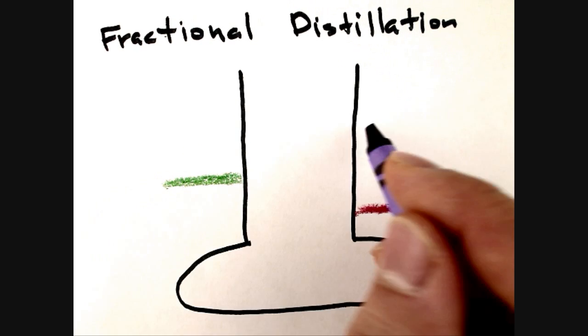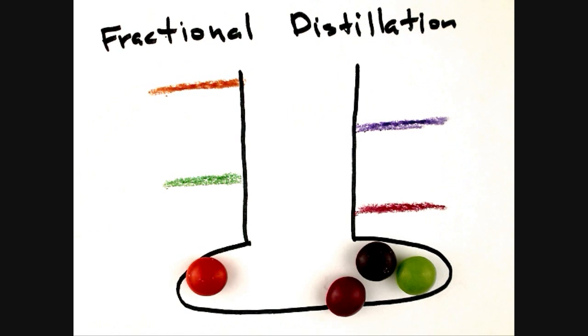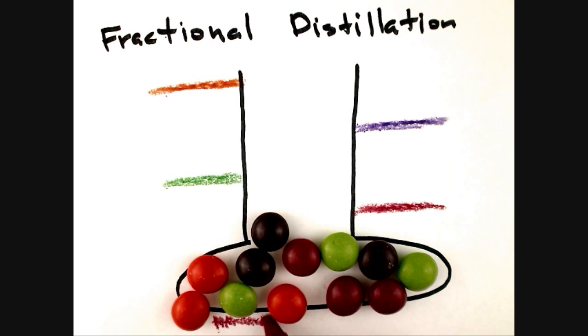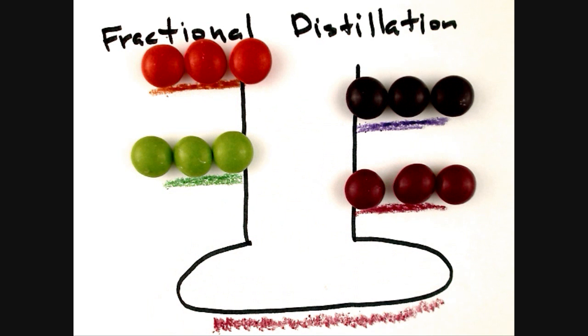Crude oil is vaporized at the bottom of a column, and as the gas rises, it cools. Each type of hydrocarbon at a specific boiling point in the column will condense back into liquid form. There are collection stations among the various known boiling points, which is how the different hydrocarbons get sorted.